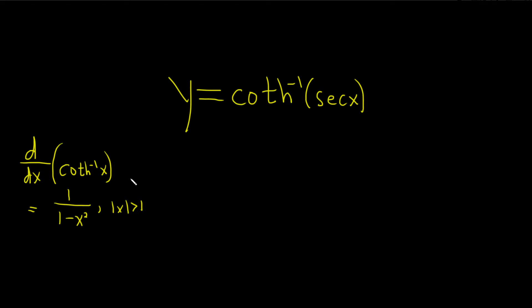In any case, we're going to use this formula here and we're going to use the chain rule. So basically, we're going to take the derivative of the outside function, apply this formula, and then multiply by the derivative of the inside.